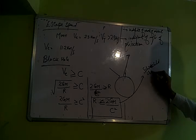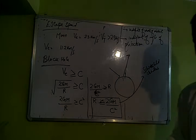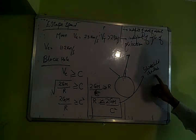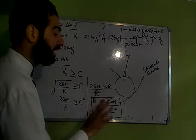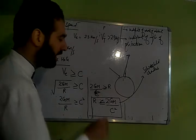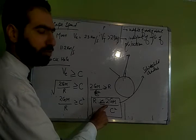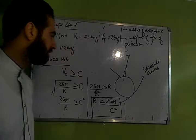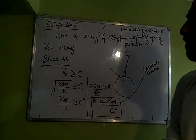So batao is black hole ka maximum radius kitna hoga taaki yeh speed of light ko bhi escape nahi hone dega? To is black hole ka radius hoga barabar 2 gm by c square. It will be the maximum radius and you know this radius is known as Schwarzschild radius. The maximum radius of the black hole so that it would not escape the light also is known as Schwarzschild radius.